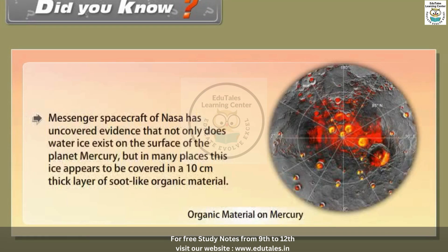Did you know? NASA's Messenger spacecraft has uncovered evidence that not only does water ice exist on the surface of the planet Mercury, but in many places this ice appears to be covered in a 10 cm thick layer of soot-like organic material.